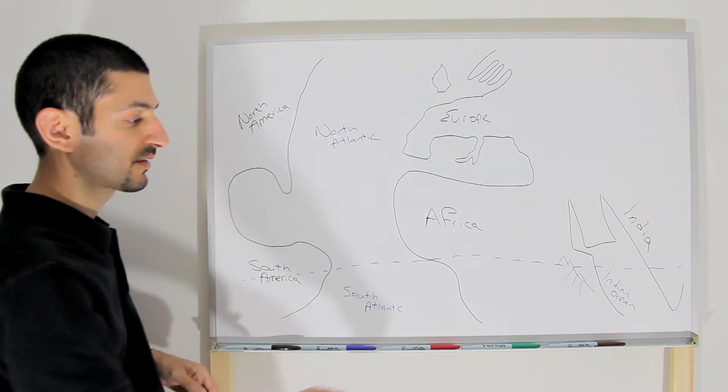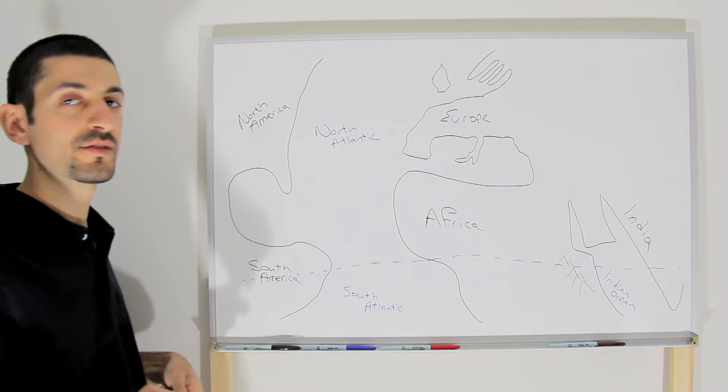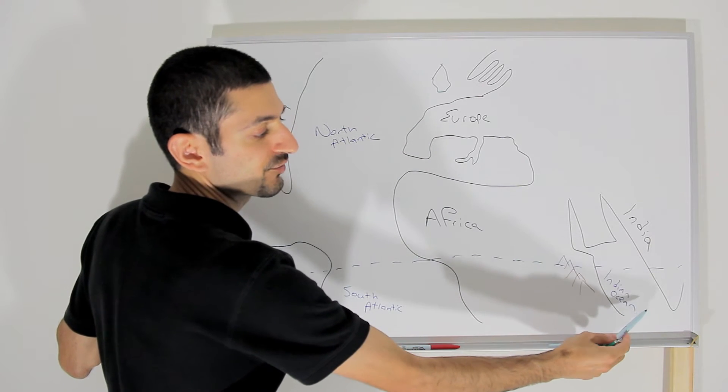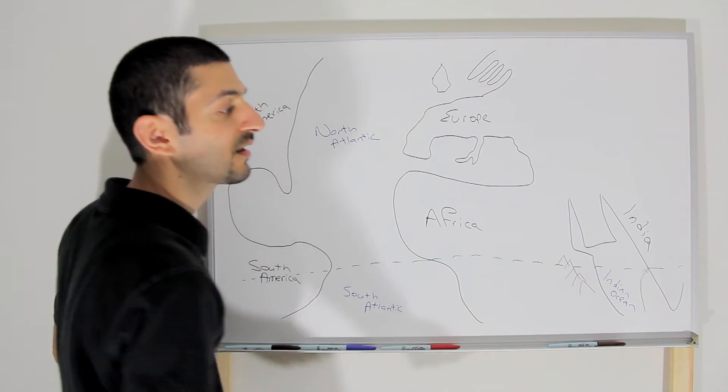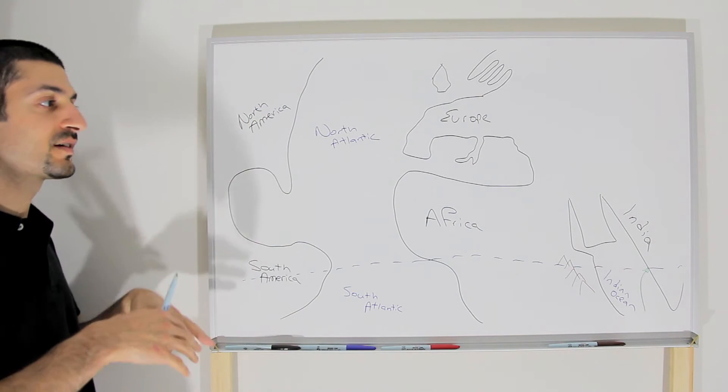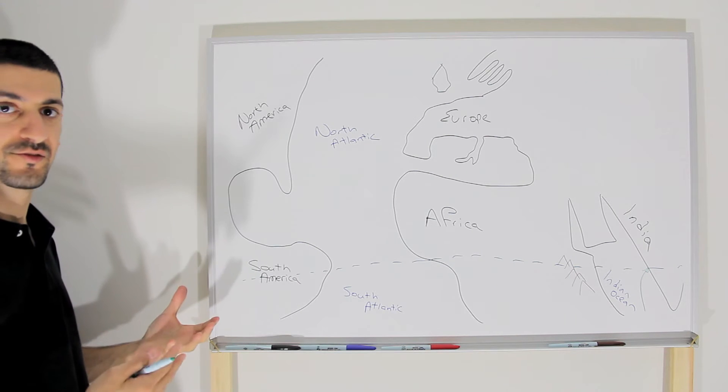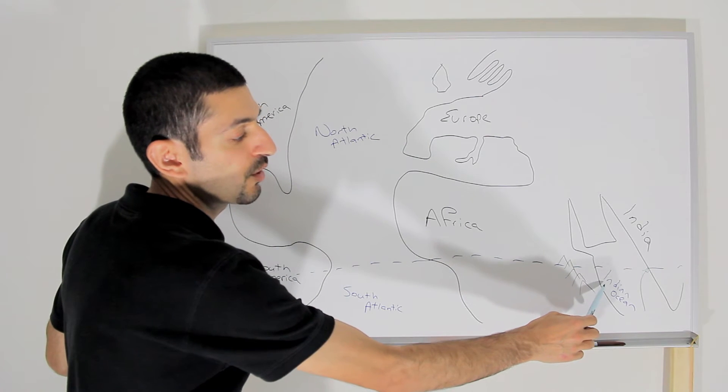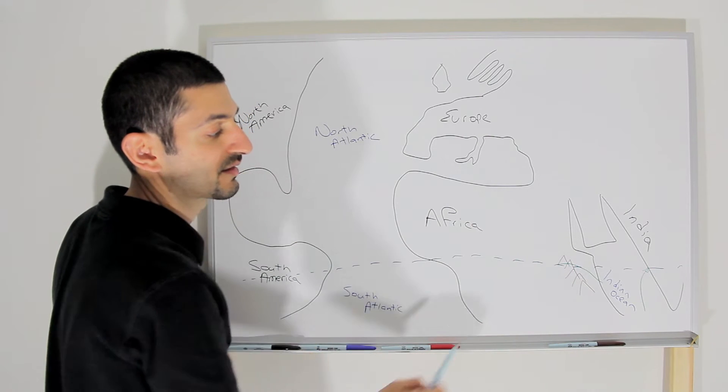Now, what happens is, when you have the monsoon season in India, all this moisture from the Indian Ocean wants to go this way into India. It gets uplifted by the Himalayas and creates torrential rainfall. But sometimes, some of the air will go over the Ethiopian Highlands.